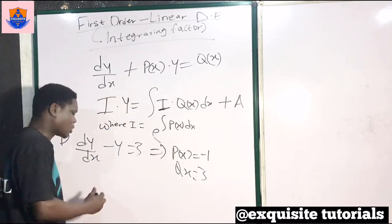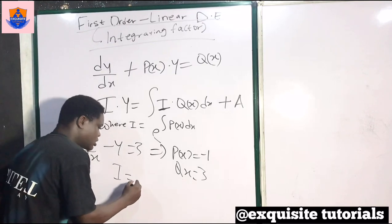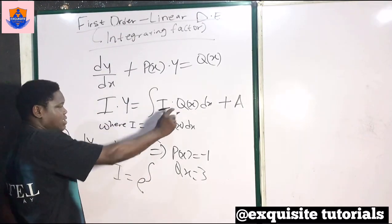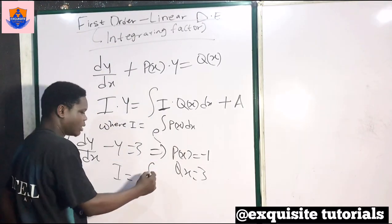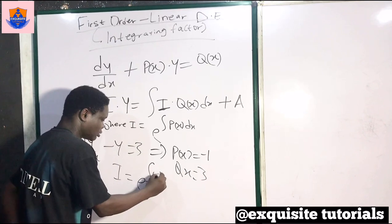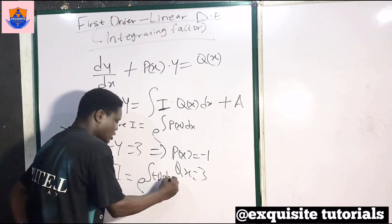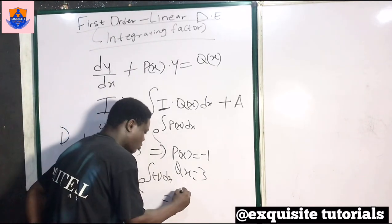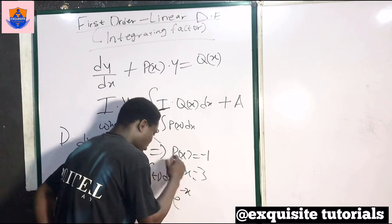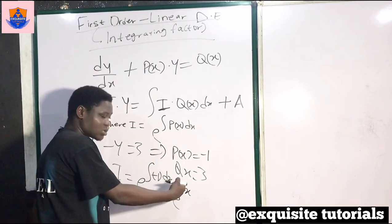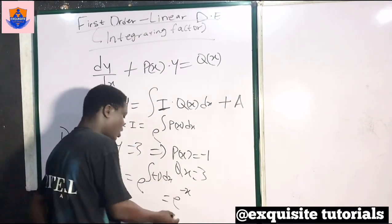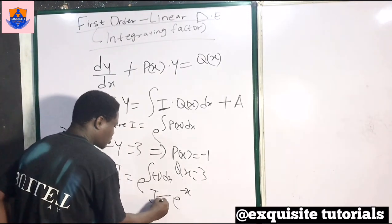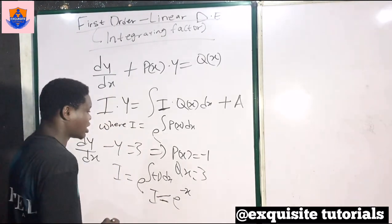What is our integrating factor i? It is the exponential of the integral of p of x, which is minus 1, dx. When I integrate minus 1, I get minus x. So we put our integrating factor as exponential of minus x.